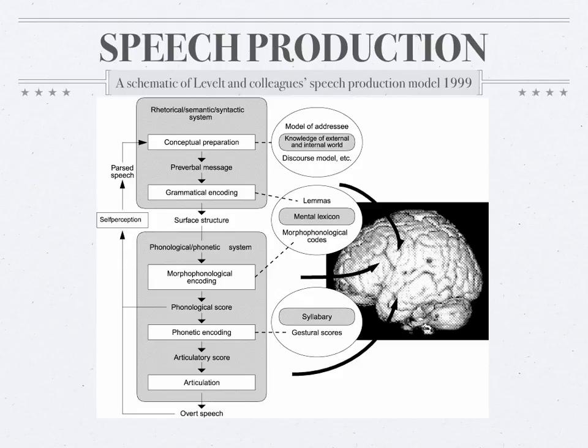Phonological encoding involves the activation of a metrical structure and syllabification, organizing a set of phonemes into syllable-sized groups — whether the specific phonemes come from the same morpheme or word or not. The outcome of this process is a set of phonological words consisting of a sequence of syllable-sized frames.